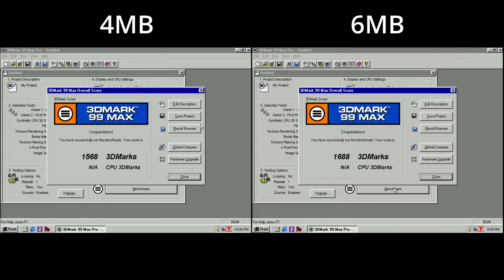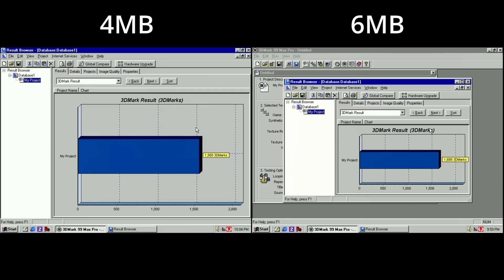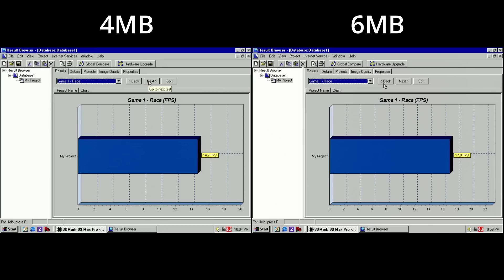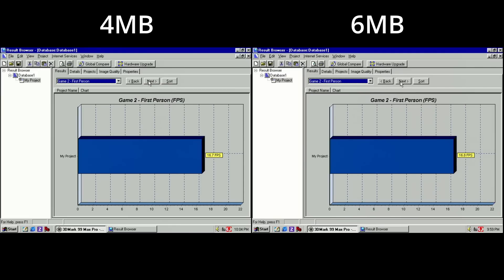Nevertheless, we score 120 points higher with the 6MB model compared to the 4MB version. That is a difference of 7-8%. The Rays benchmark rendered on average with 17 frames per second using the upgraded Voodoo card. That is 15% higher compared to the 14.7 frames per second on the 4MB model. But what really impressed me is that we stayed at or above 15 frames per second with the 6MB model. The 4MB card dropped to single digit frame rates in the same test. And finally the first person benchmark which scored almost identical.